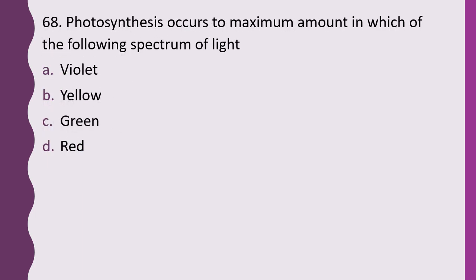Question 68. Photosynthesis occurs to a maximum amount in which of the following spectrum of light? Violet, yellow, green, or red. The correct answer is option D, in the red spectrum.